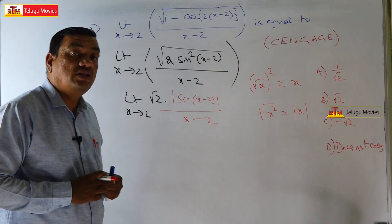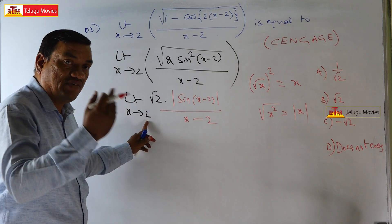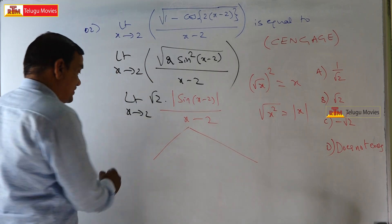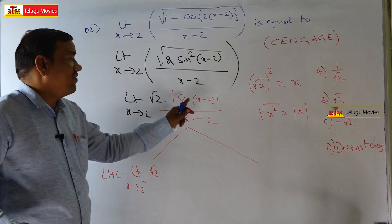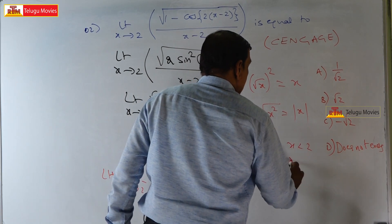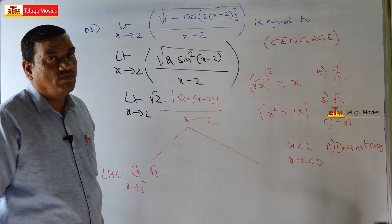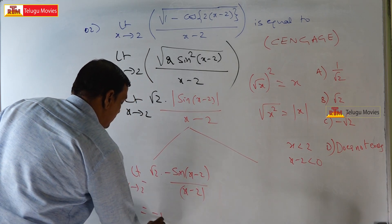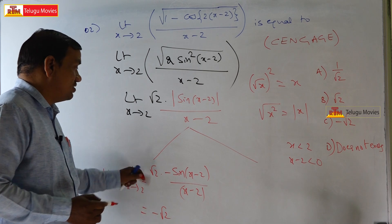Whenever you get the modulus, the value will change according to left-hand or right-hand limit. For the left-hand limit: x→2⁻ means x < 2, so x - 2 < 0, meaning sin(x-2) is negative. Therefore it becomes -sin(x-2)/(x-2), giving answer -√2.